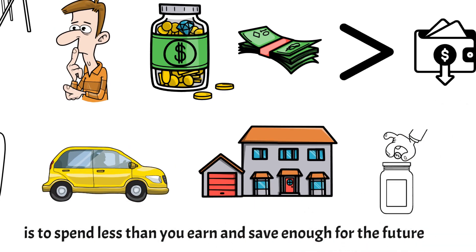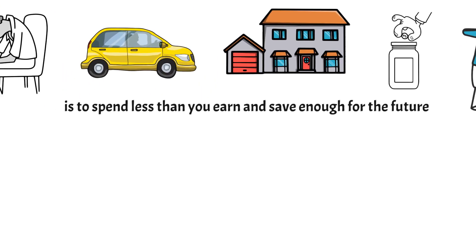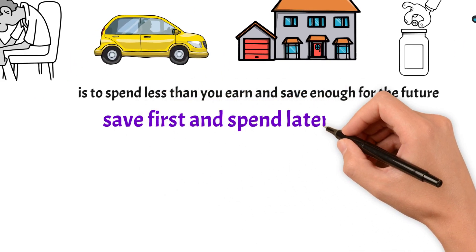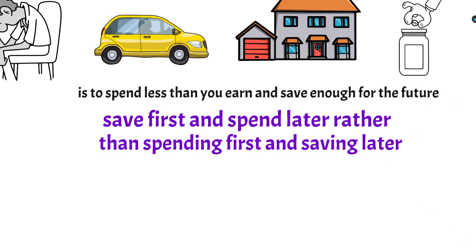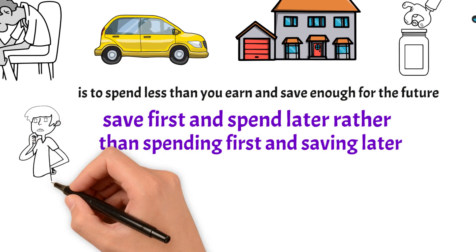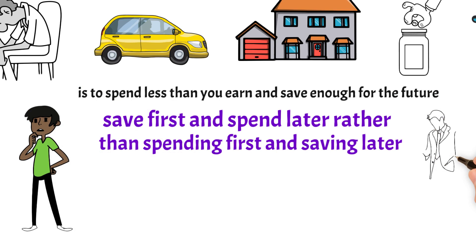The simple formula to remain financially healthy is to spend less than you earn and save enough for the future. A prudent way to save is to make savings a target and not a residue. It means you should save first and spend later rather than spending first and saving later. How much you need to save can depend on your age, stage, primary financial goals, family situation, etc.